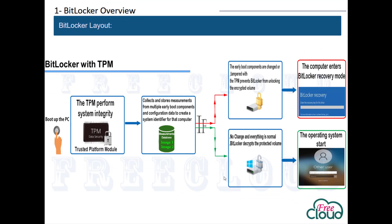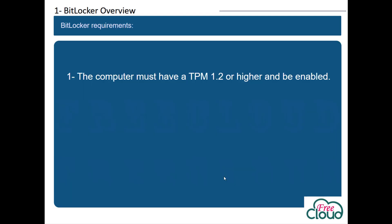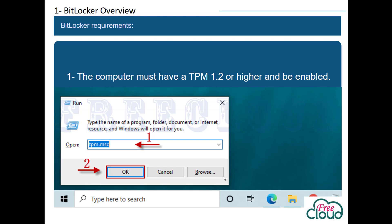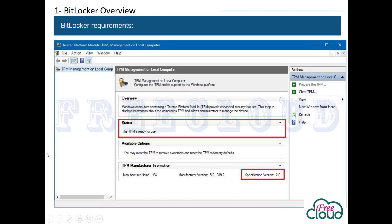To summarize, to enable BitLocker the following requirements must be met. The computer must have a TPM version 1.2 or higher and it must be enabled. To check the TPM version, open Run and type tpm.msc to open the TPM management console, where you can see the status and the version of TPM.